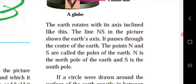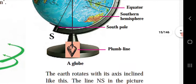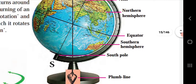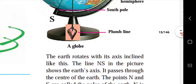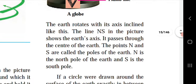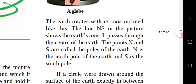The points N and S are called the poles of the earth. N is the North Pole of the earth and S is the South Pole.